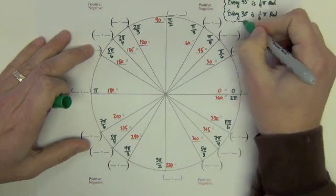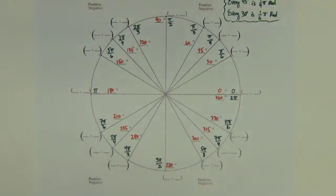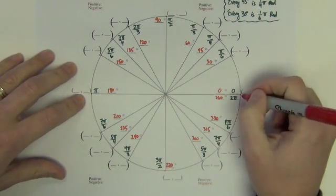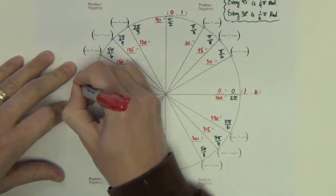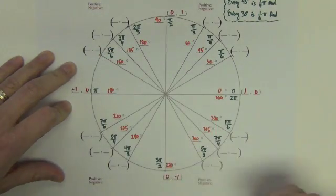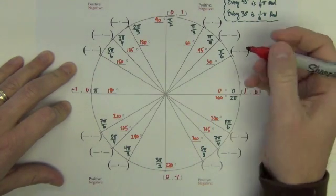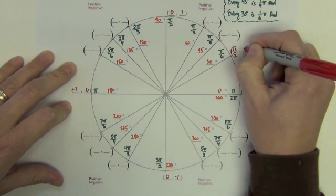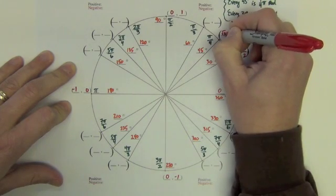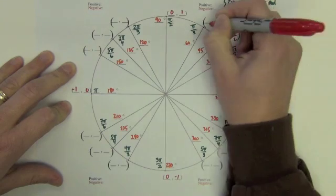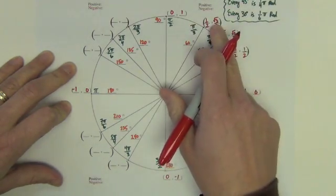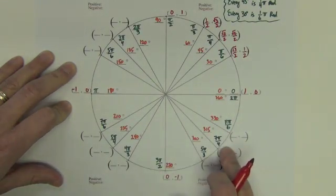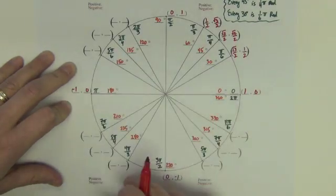Now we've got all the radians, with an easy way to remember — just count by one-fourth and one-sixth. Finally, the points — this is the important part. The xy-axis points are (1, 0), (0, 1), (-1, 0), and (0, -1). Copying the first quadrant points from the previous slide: (square root of 3 over 2, one half), (square root of 2 over 2, square root of 2 over 2), and (one half, square root of 3 over 2). If we know these three points, we can reflect them and add negatives appropriately to get all the other points.